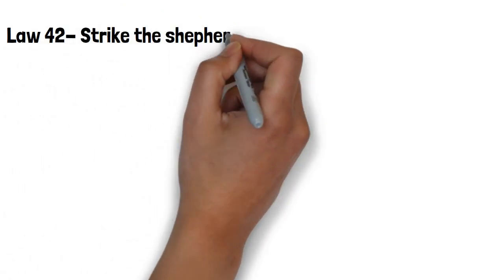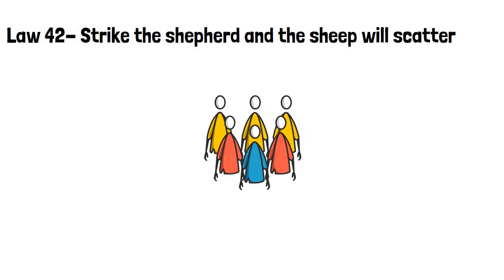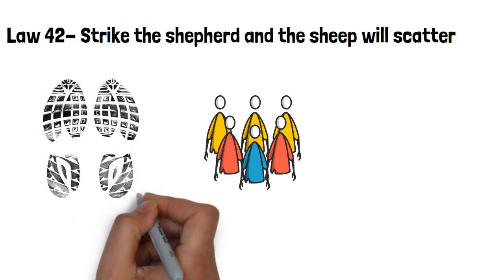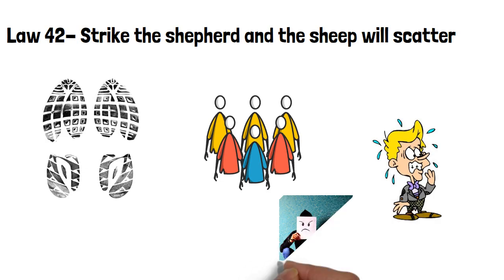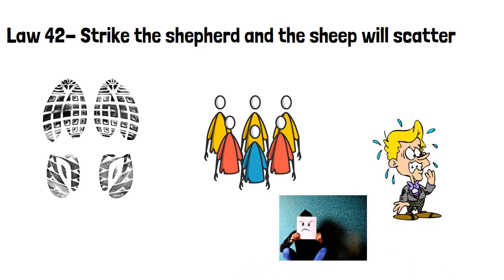Law 42, strike the shepherd and the sheep will scatter. Within any group, trouble can usually be traced to a single source. The sad, chronically dissatisfied one, who will always stir up discord and infect the group with their uneasiness. In no time the dissatisfaction spreads. Act before it becomes impossible to disentangle.